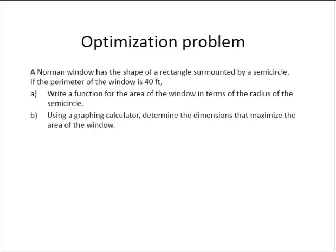A Norman window has the shape of a rectangle surmounted by a semicircle. If the perimeter of the window is 40 feet, write a function for the area of the window in terms of the radius of the semicircle. And using a graphing calculator, determine the dimensions that maximize the area of the window.